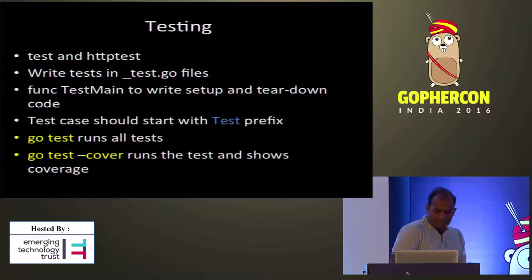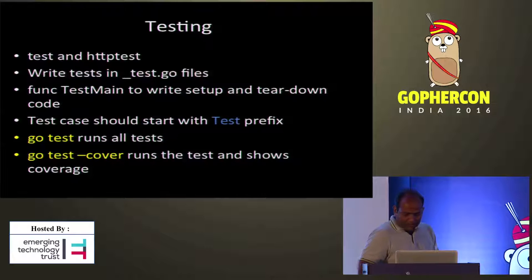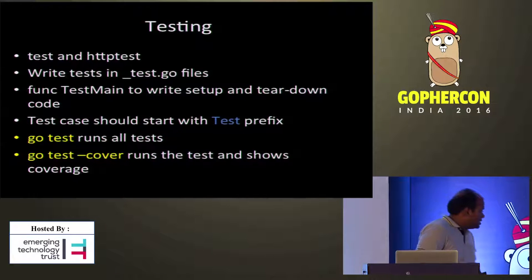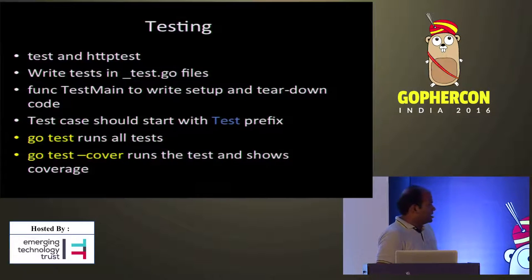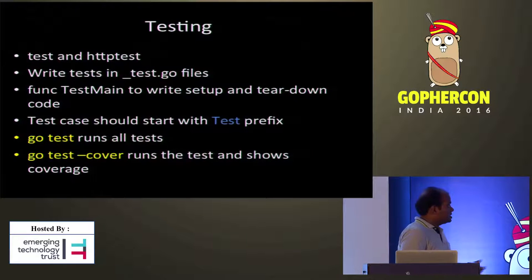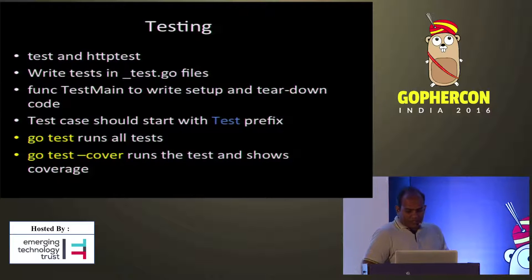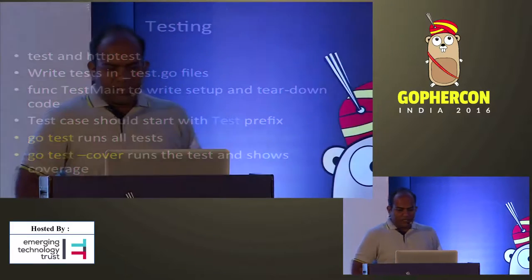Next is how do you test this. Go provides very good test packages — testing and net/http/httptest. Only two are needed to test your web service. All tests are to be written in a file with an underscore test.go suffix. You can use TestMain to write your setup and teardown code. Every test has to start with a Test prefix. When you run go test, it runs all the tests. When you want to see test coverage, run go test -cover.